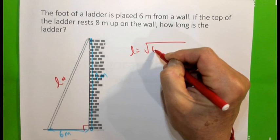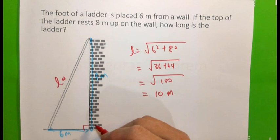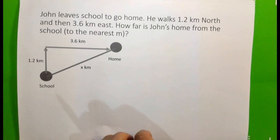So, let's say the length of the ladder is L. L therefore equals square root of 6 squared plus 8 squared, equals square root of 36 plus 64, square root of 100, which is 10 metres. Again, looking at this, you should recognise that it is one of the Pythagoras triples: 6, 8 and 10.